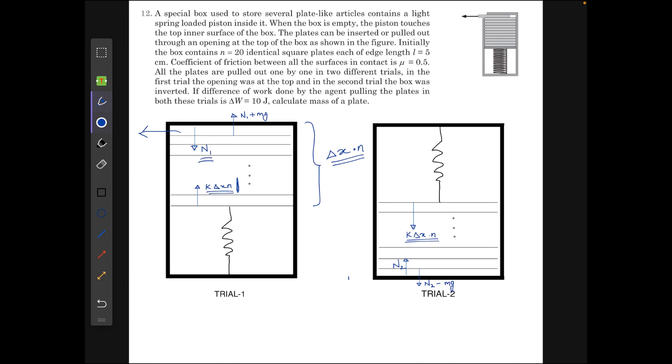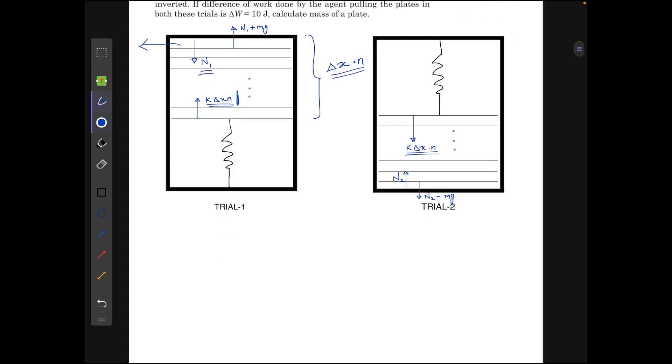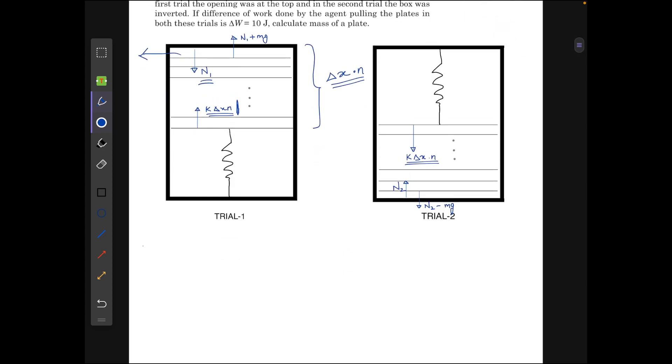And one more thing, the normal force between the first plate and second plate will be n1 plus mg which we can get easily from the force balance on the first plate. So the equations here we can get are n1 plus n times mg will be equal to k delta x times n. So from here we get that n1 equals n times (k delta x minus mg).